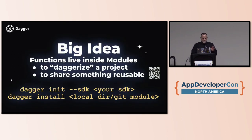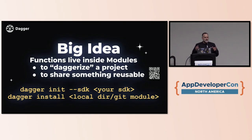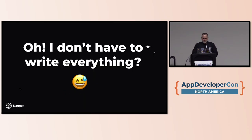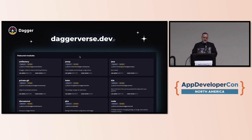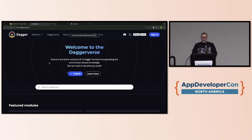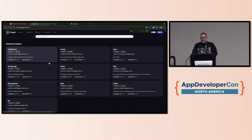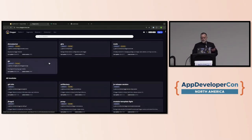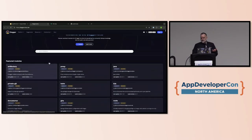The big idea: functions live inside modules. Creating a new module is easy — just dagger init with the SDK of your choice: Go, Python, TypeScript. Then dagger install any dependencies you want. I built a Python module using code from ChatGPT — really easy and fast. You don't have to write everything from scratch. We have Daggerverse, a community index of modules. When people publish modules they show up there, with featured ones and many more to find.